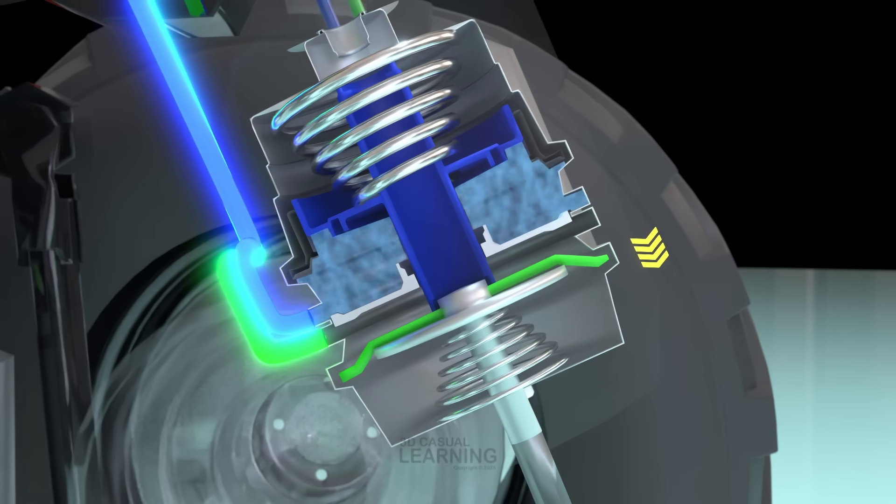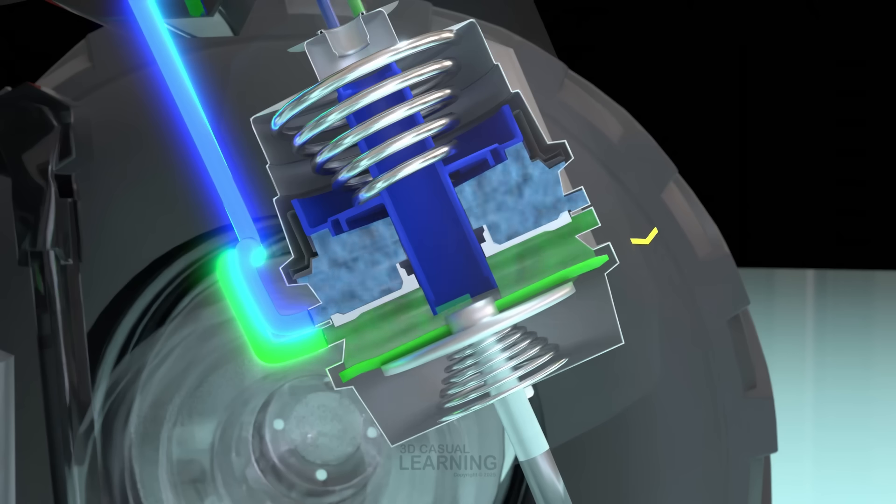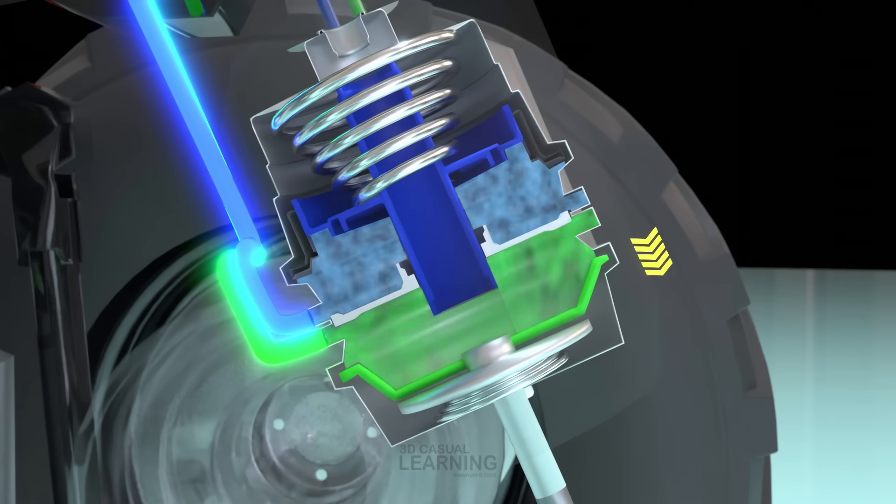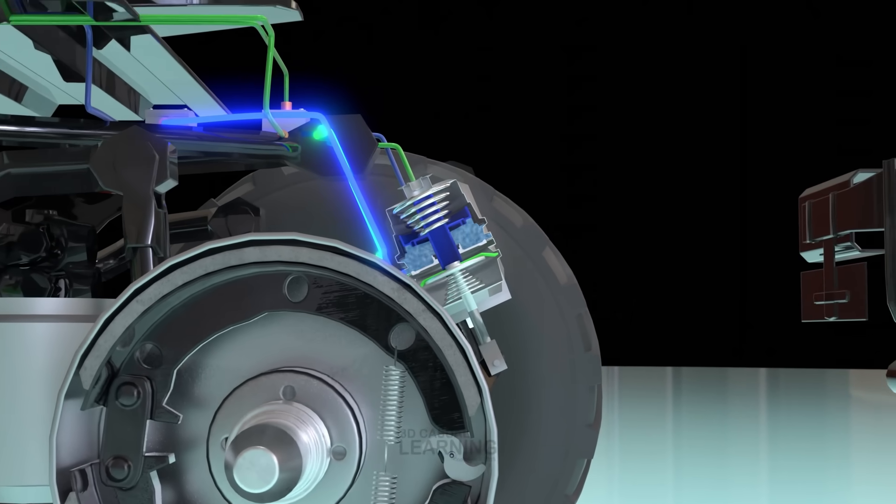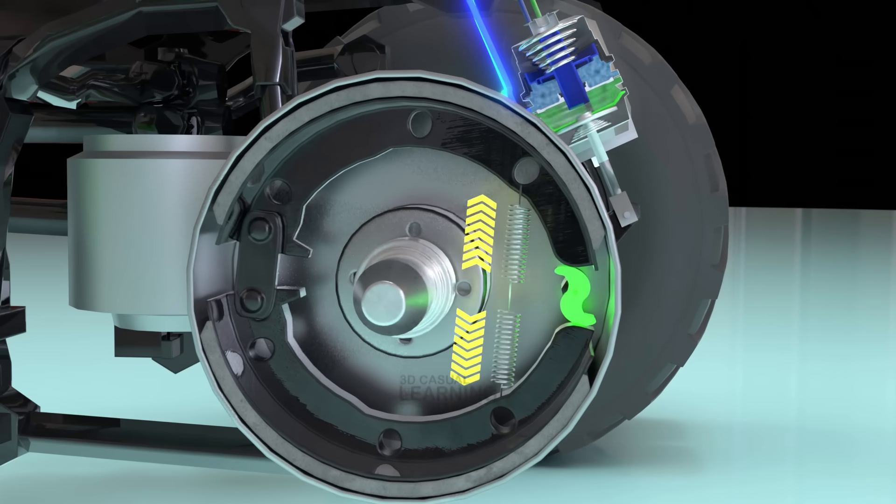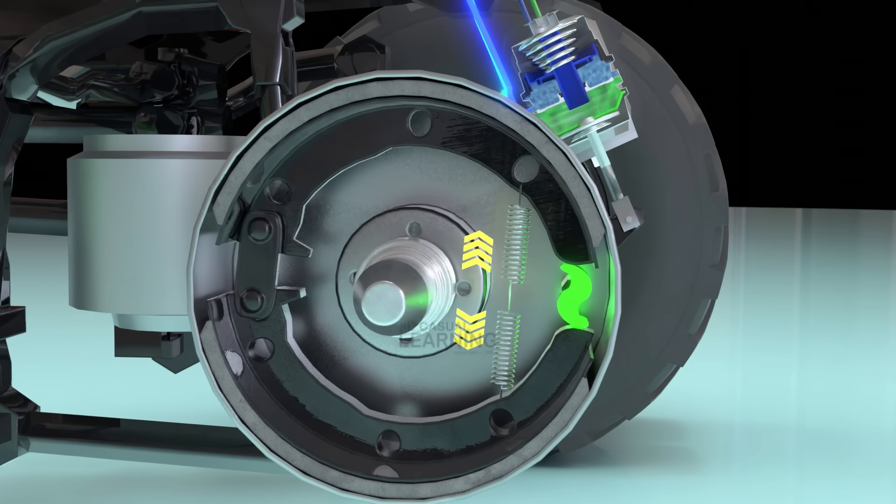When a brake application occurs, compressed air enters the chamber, expanding the diaphragm. This expansion drives the push rod and push plate outward, overcoming the resistance of the return spring. As a result, the brake is applied.